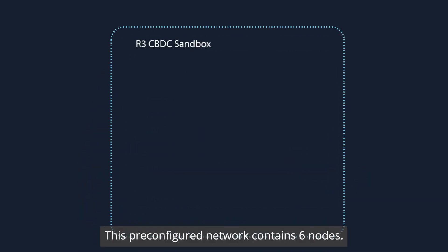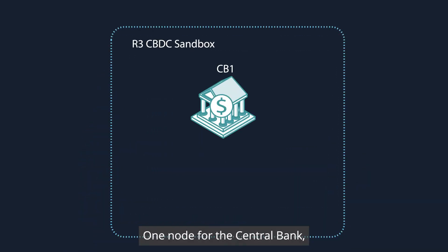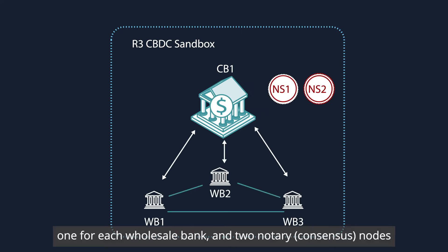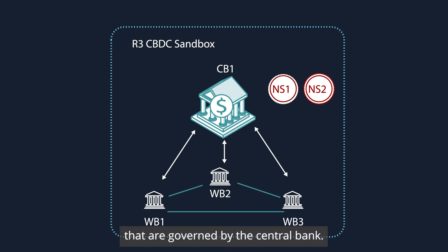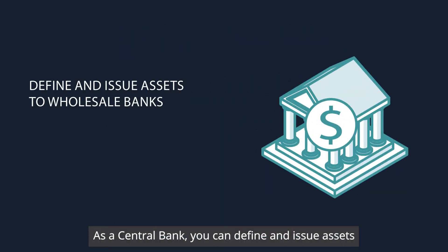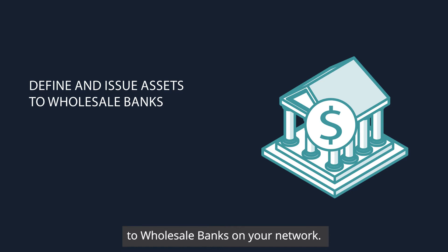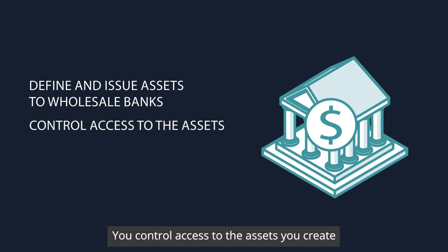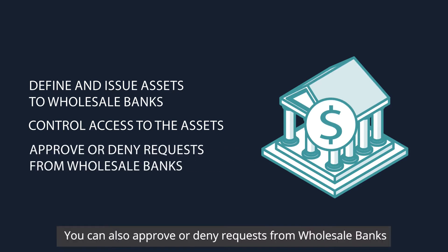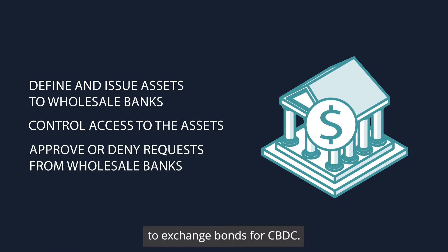This pre-configured network contains six nodes — one node for the central bank, one for each wholesale bank, and two notary or consensus nodes that are governed by the central bank. As a central bank, you can define and issue assets to wholesale banks on your network, and control access to the assets you create using member access states. You can also approve or deny requests from wholesale banks to exchange bonds for CBDC.